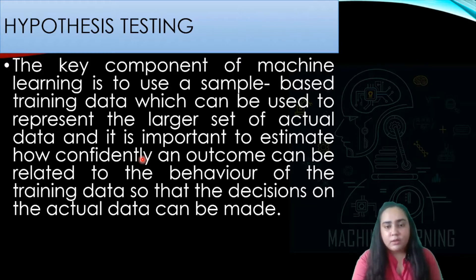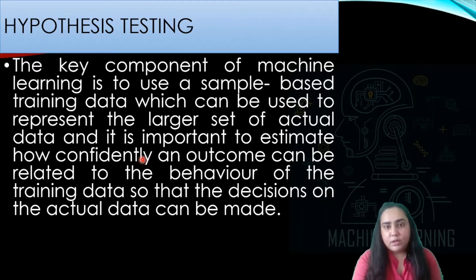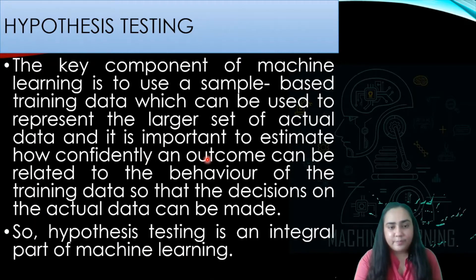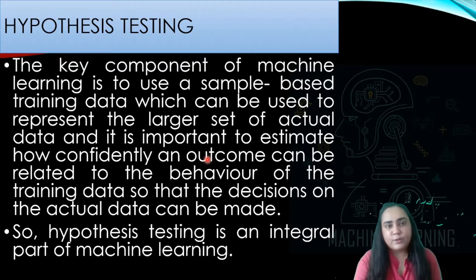You have to provide some percentage of confidence about your findings from the sample data to show that whatever you found in the sample data is also going to be applicable for your entire population or the larger set of actual data. Hypothesis testing is an integral part of machine learning because it is used exactly for this reason.